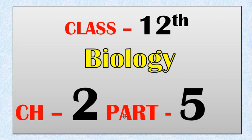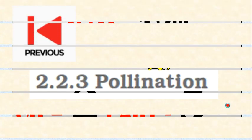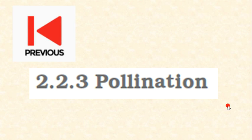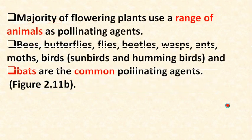Hello, my dear students. Jai Swami Narayan. This is Part 5 of Chapter 2: Sexual Reproduction in Flowering Plants. In the previous video we covered pollination, its types, and agents of pollination — wind, water, biotic, and abiotic.